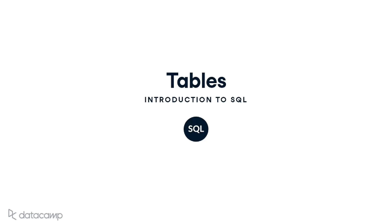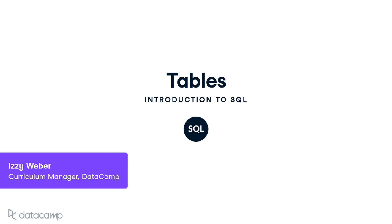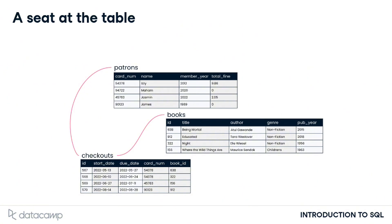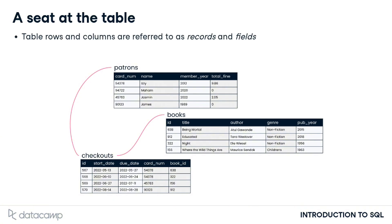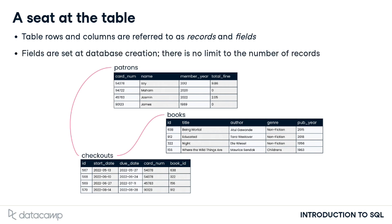Now that we know the basic organization of a database, let's take a closer look at the main building block of databases: tables. We saw in the previous lesson that databases are organized into tables, which hold related data about a particular subject. Tables are organized into rows and columns. In the world of databases, rows are often referred to as records and columns as fields. A table's fields are limited to those set when the database was created, but the number of rows is unlimited.